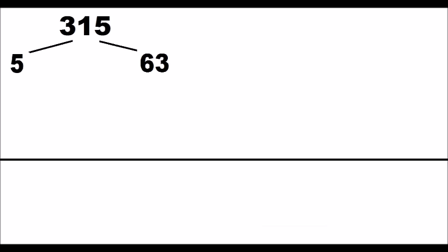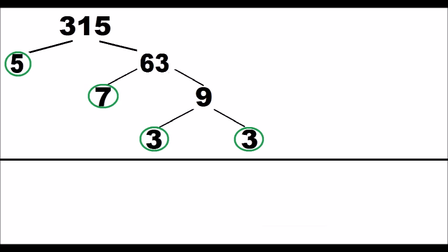Hello. The prime factors of a number using the factor tree method is based on dividing the initial number into different branches until all the prime factors are obtained. In this case, we identify all the prime factors with circles.